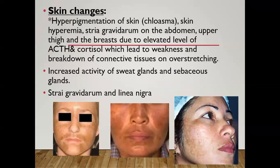Regarding skin changes, there is hyperpigmentation called chloasma — darkening of color — due to increased melanin deposition, more prominent on the face, around the nipples, and along the linea nigra. This is due to elevated ACTH and cortisol, which cause breakdown in connective tissue from over-stretching, making striae apparent. There is also an increase in sweat glands and sebaceous glands, so the skin becomes more oily. The striae on the abdomen are called striae gravidarum.